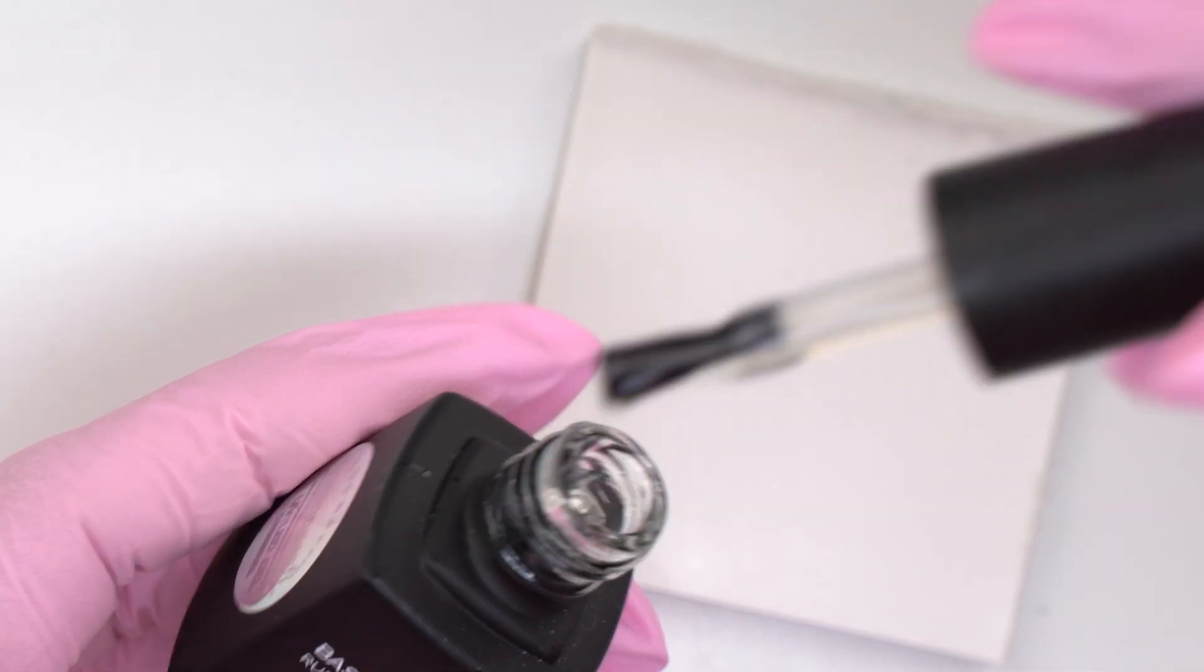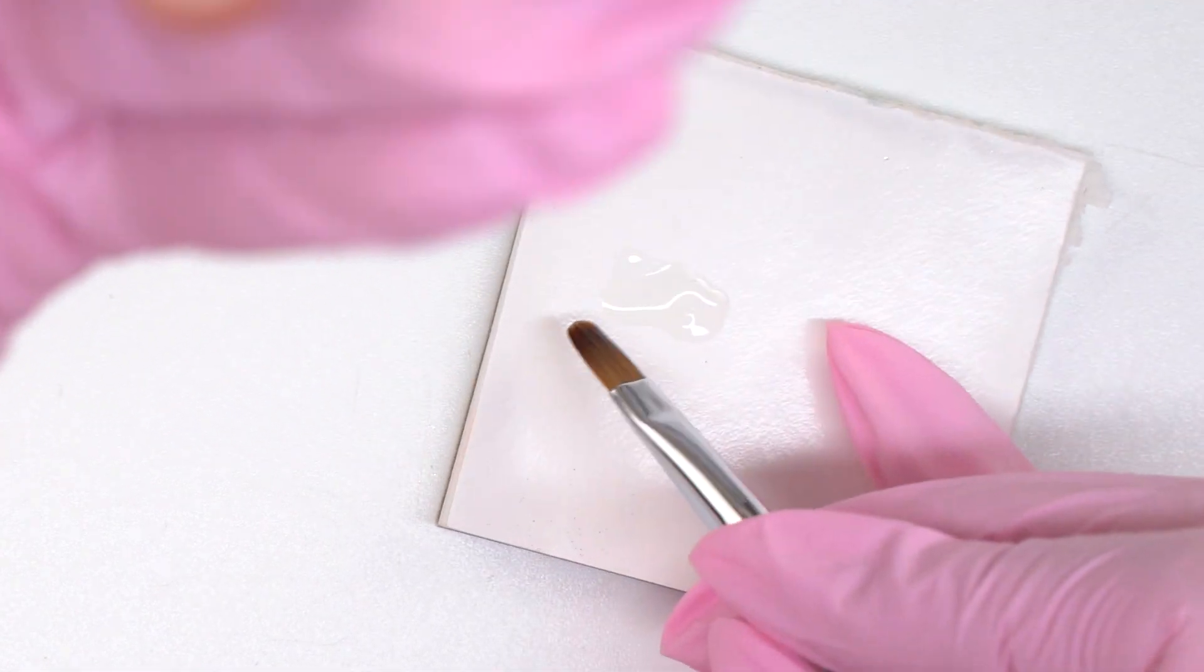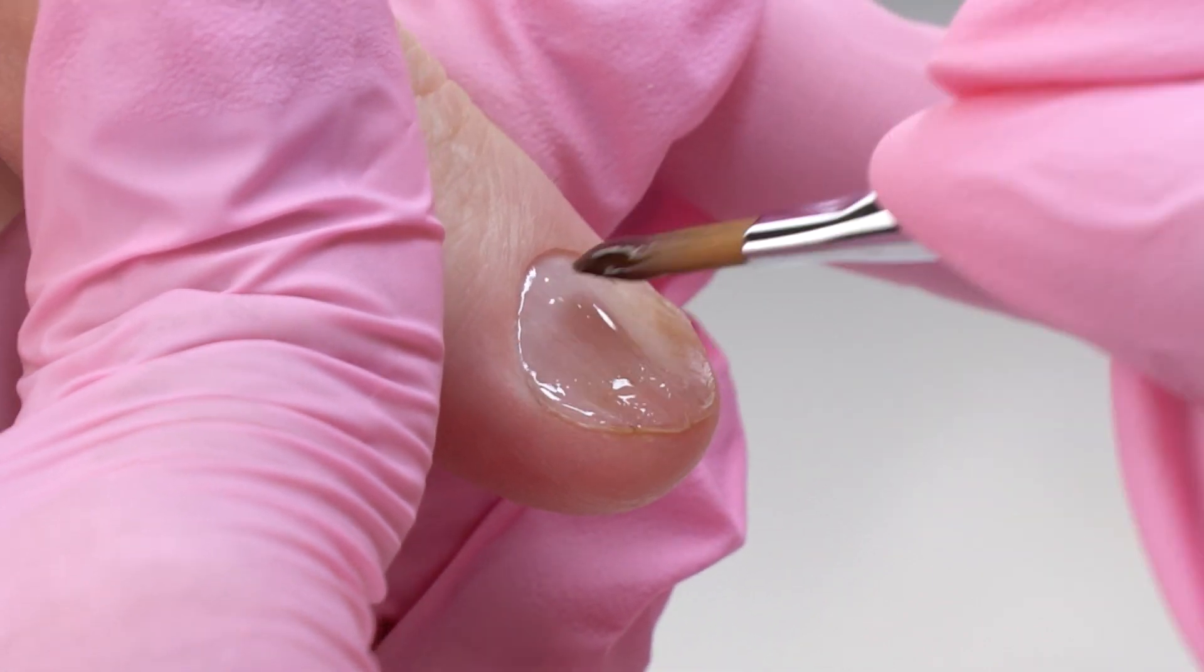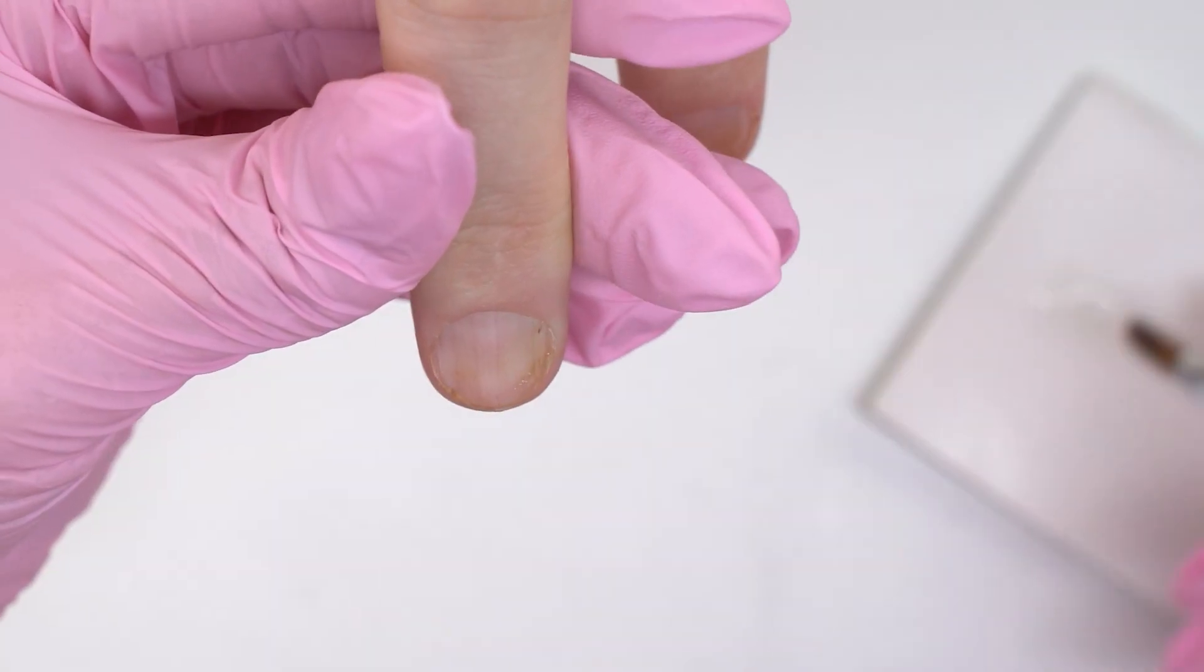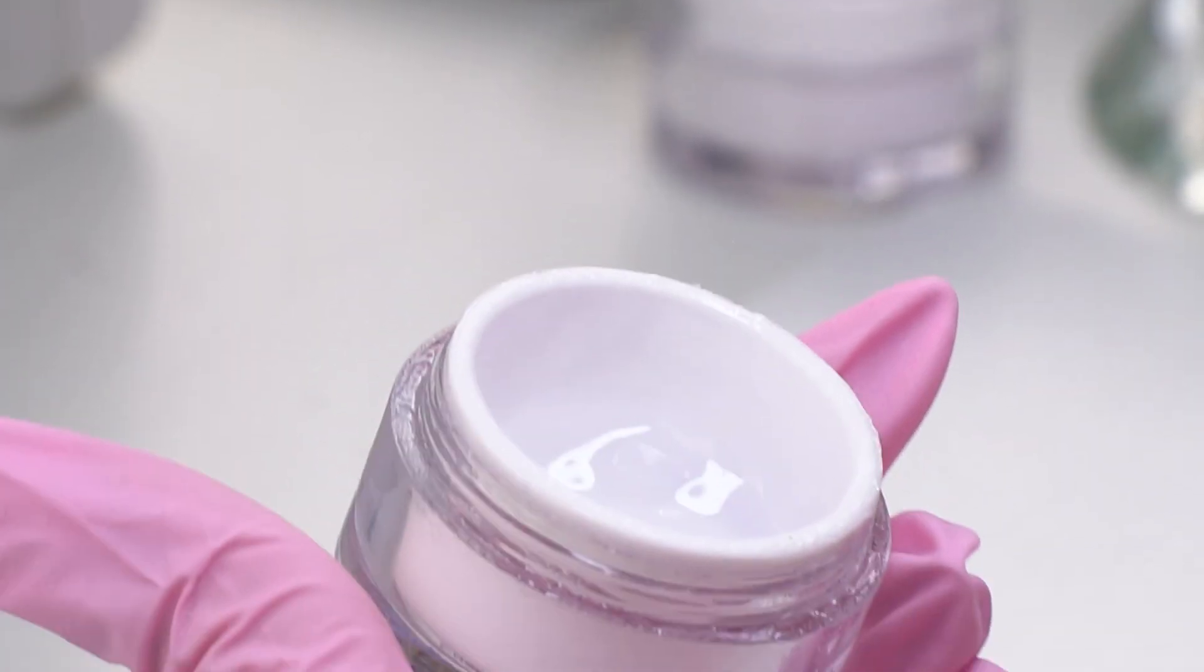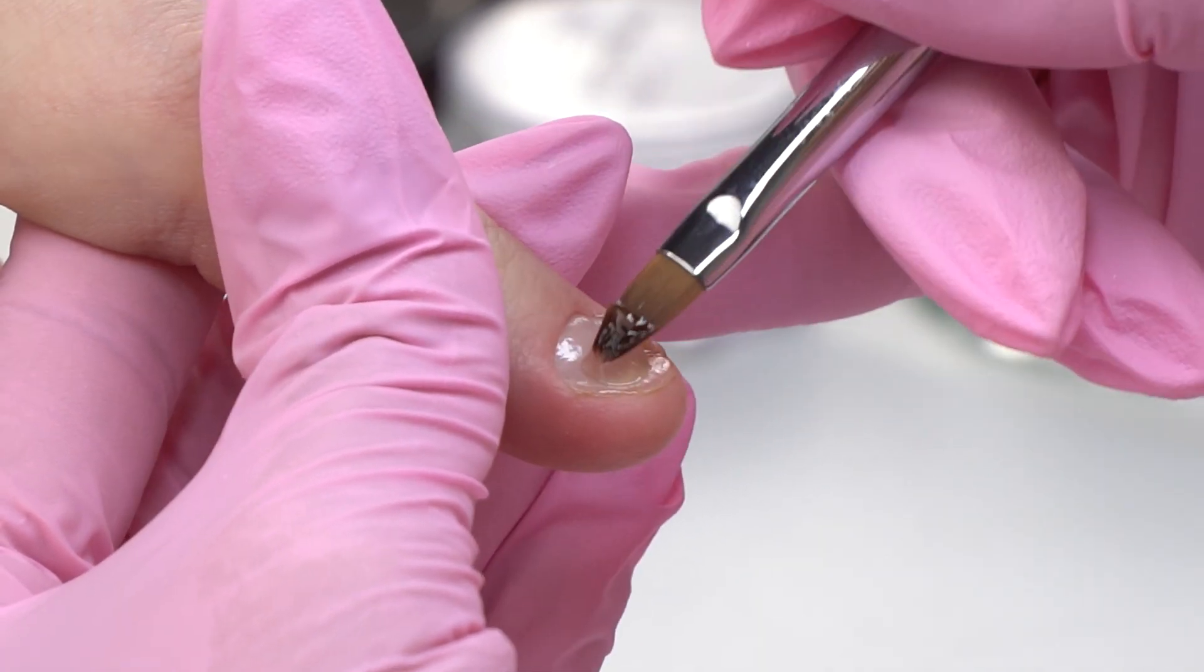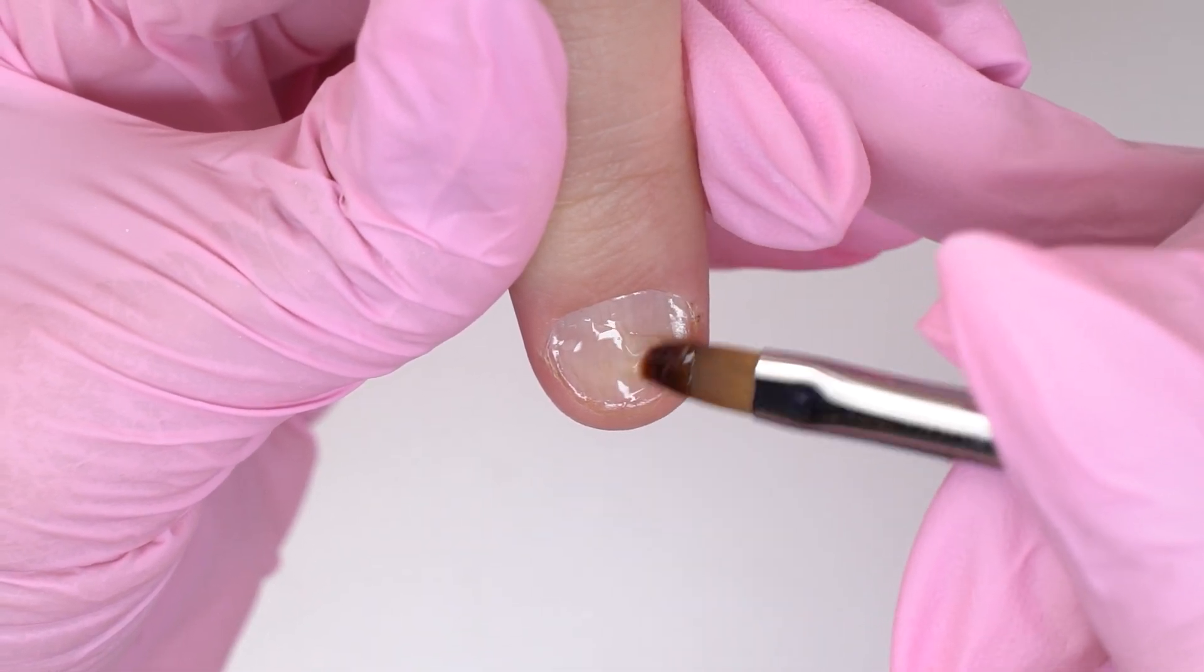I put some of this Cosmoprofi base coat on a palette to do a thin layer with another brush, to get between all the scales and stick the coating well. We can fill in the dents with it. Though we shouldn't do a thick layer to avoid a nail plate burn, because a thick layer will get too hot in a lamp.